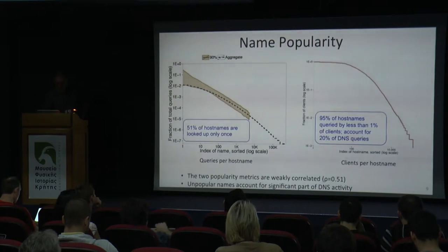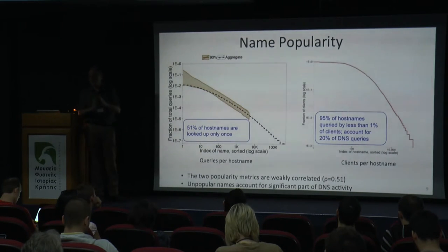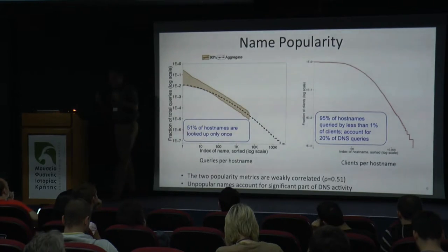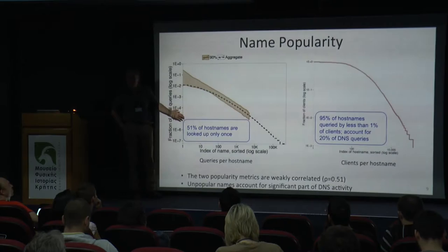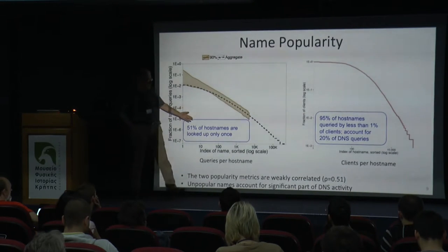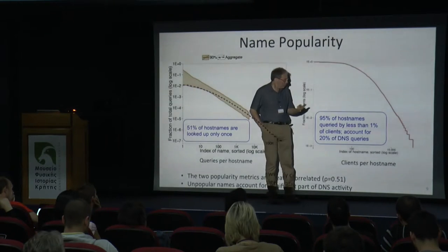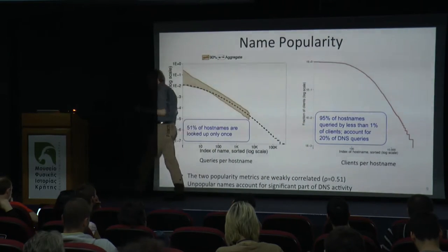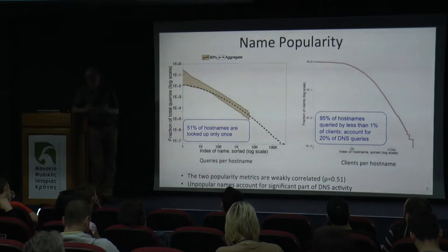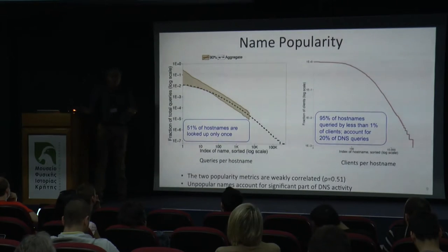Another interesting part: we tend to say let's drop off the tail, but it turned out that in DNS, this tail accounts for a very significant portion of overall activity. 51% of hostnames are only looked up once in our week of observation. And hostnames queried by only 1% of clients constitute 95% of all hostnames, and they are responsible for 20% of all queries. So when developing the model, we cannot discard unpopular names because in aggregation, that is where the activity is.